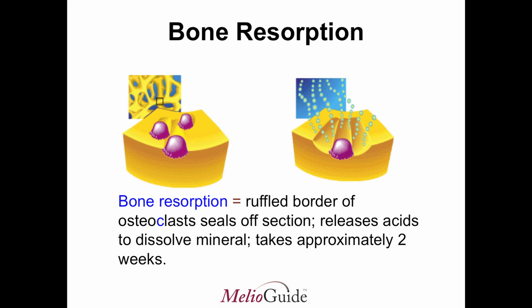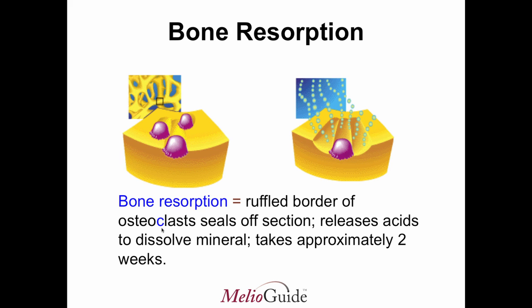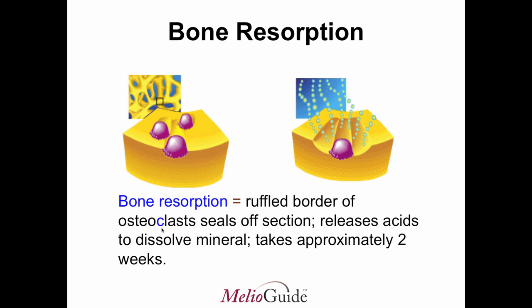What happens in our bone is that, first of all, we have cells that are called osteoclasts. Osteoclasts are cells that clean bone or cut bone. These cells have acid that are released to dissolve the current bone that you have. This takes time — it takes about two weeks for the osteoclasts to settle on the bone, the acid to be released, and pits to be formed.